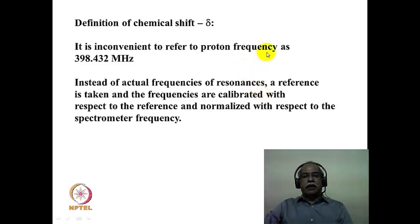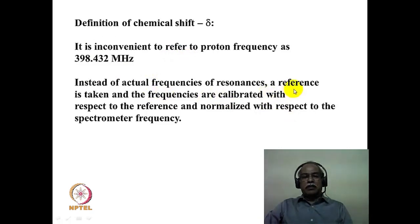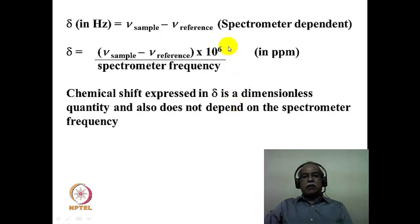The definition of chemical shift can be followed in the next couple of slides. For example, referring to a proton frequency as a large number like 392.432 MHz would be extremely inconvenient to remember. Instead of dealing with actual frequencies of resonances, one can take a reference compound and calibrate all frequencies with respect to it. In order to make the frequencies independent of the spectrometer frequency, one can normalize with respect to the spectrometer frequency. Delta, which is the chemical shift expressed in Hz, is simply the difference between the sample frequency and the reference frequency, and this is highly dependent on the NMR spectrometer.